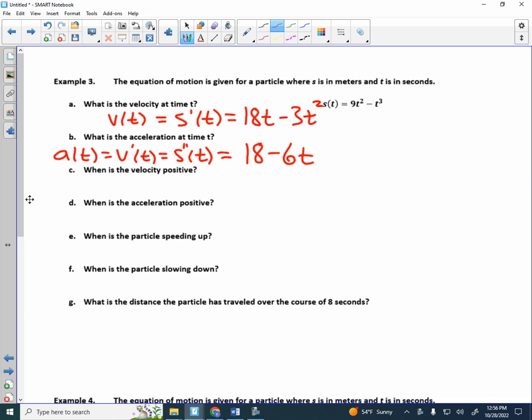18 minus 6t. Everybody okay so far? Nothing new, just took a second derivative. So if you look at this, I'm going to graph the velocity function and I'm going to graph the acceleration function. What shape does the velocity function make? Parabola, right side up or upside down?